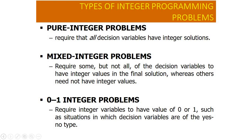The third type is 0-1 integer problems, also called binary integer problems. It requires integer variables to have a value of 1 or 0 only, for situations where decision variables are of a yes-or-no type — for example, 0 for no and 1 for yes.